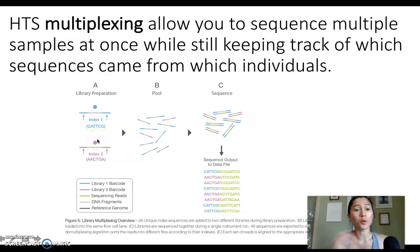When we're preparing our samples for sequencing, we can use something called an index, or barcode, which is a unique sequence of usually about six nucleotides that we attach to our samples.